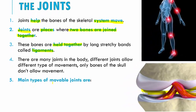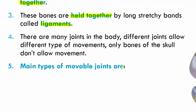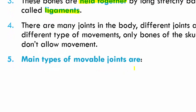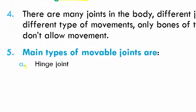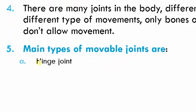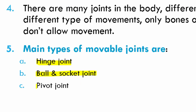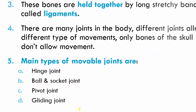Now these joints are of different types. What are the different types of movable joints? You have the hinge joint, then the ball and socket joint, the pivot joint, and the gliding joint. Let's look at each of these in detail one by one.